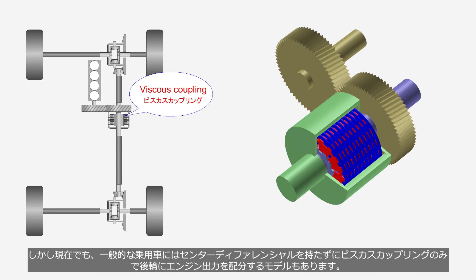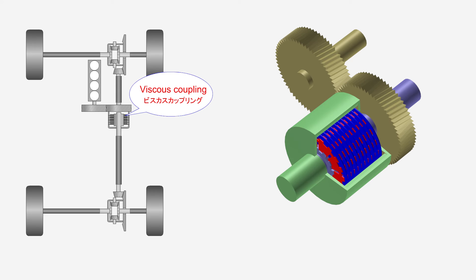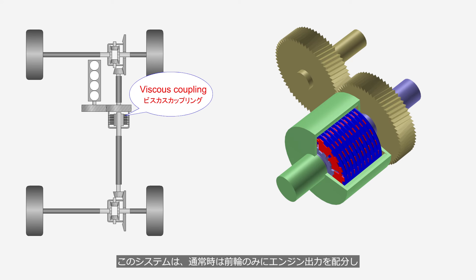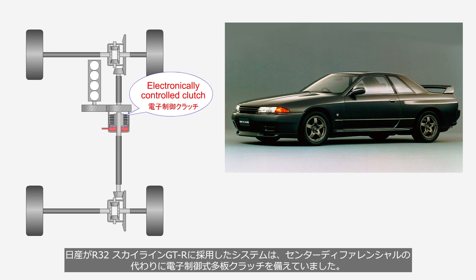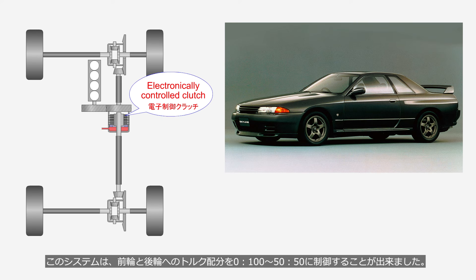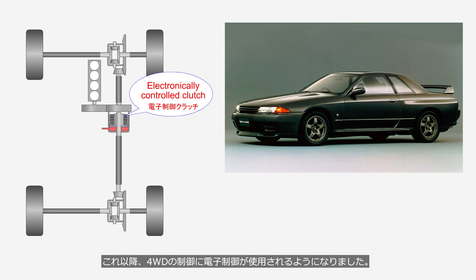Even today, there are still models of regular passenger cars that distribute engine output to the rear wheels using only a viscous coupling without a center differential. This system normally distributes engine output to the front wheels, only sending power to the rear wheels when the front wheels slip. In 1989, Nissan equipped the R32 Skyline GT-R with a system featuring an electronically controlled multi-plate clutch instead of a center differential, able to control torque distribution between the front and rear wheels from 0:100 to 52:50. The use of electronic control for AWD systems began from this point onward.